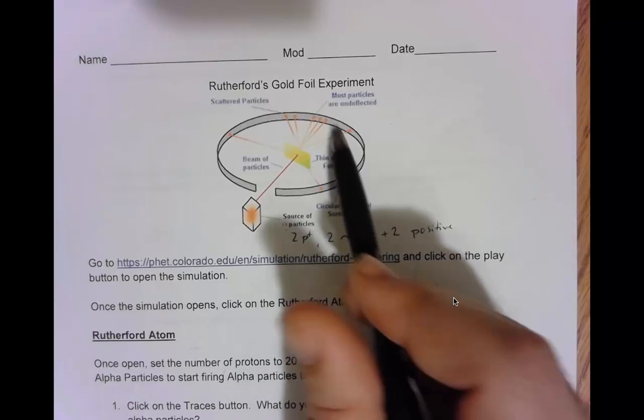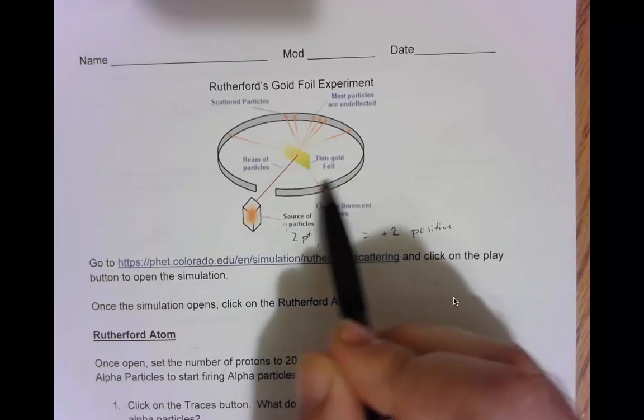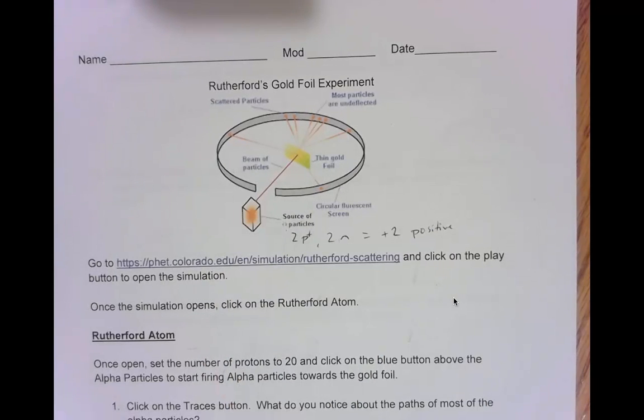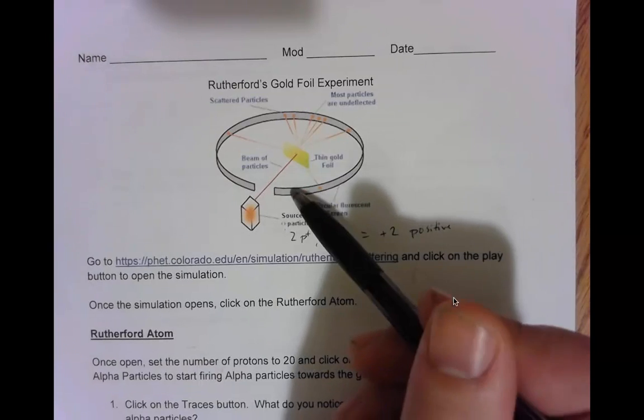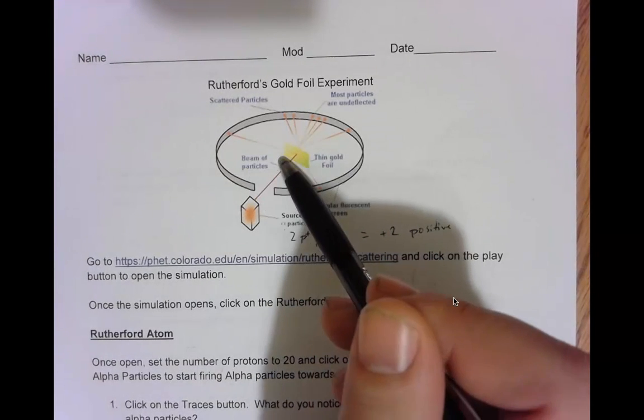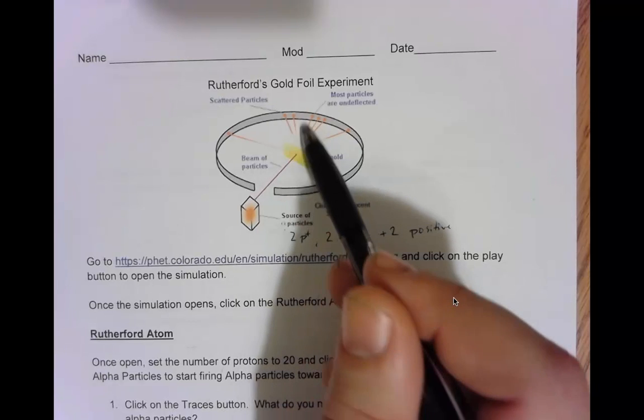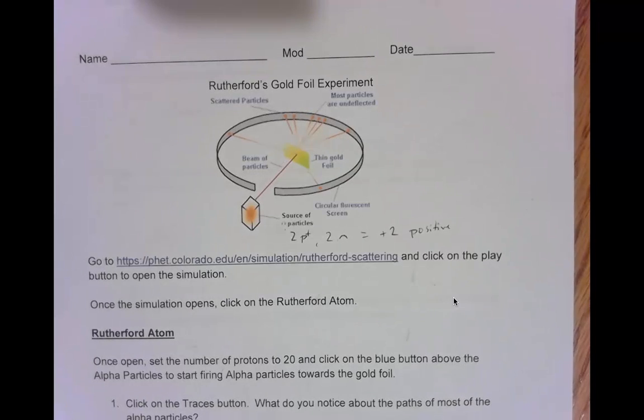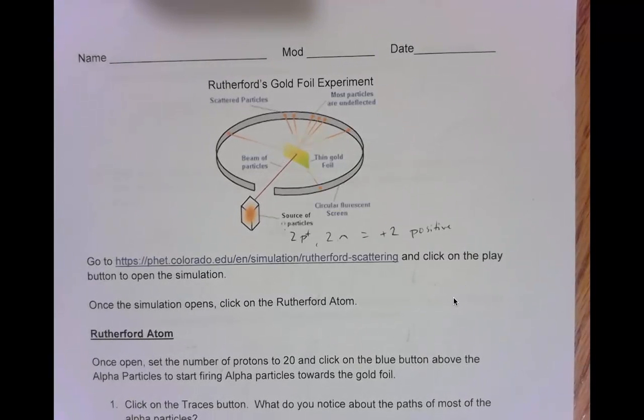Around this piece of gold foil, he has a circular fluorescent screen. When I say the word fluorescent, most people think about fluorescent lights, and if you're thinking about that, you are right in this case. This screen is made out of a similar material. When a particle strikes the screen, it lights up, and then we can see where the particle collided and what happens when we shoot a particle at this piece of gold foil.